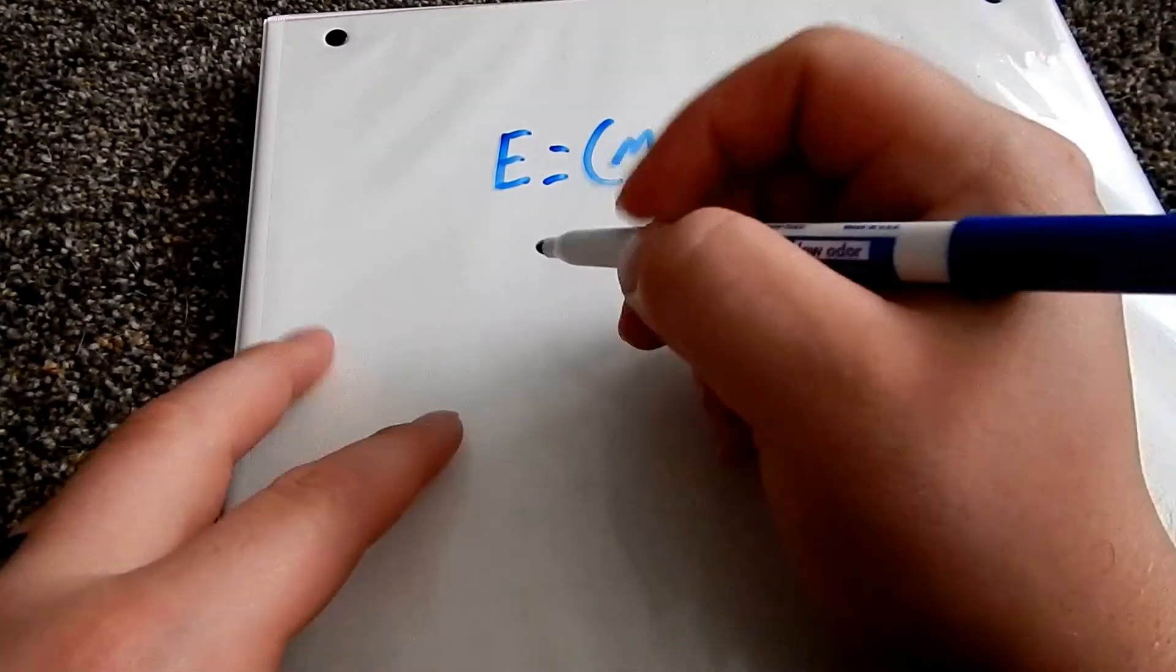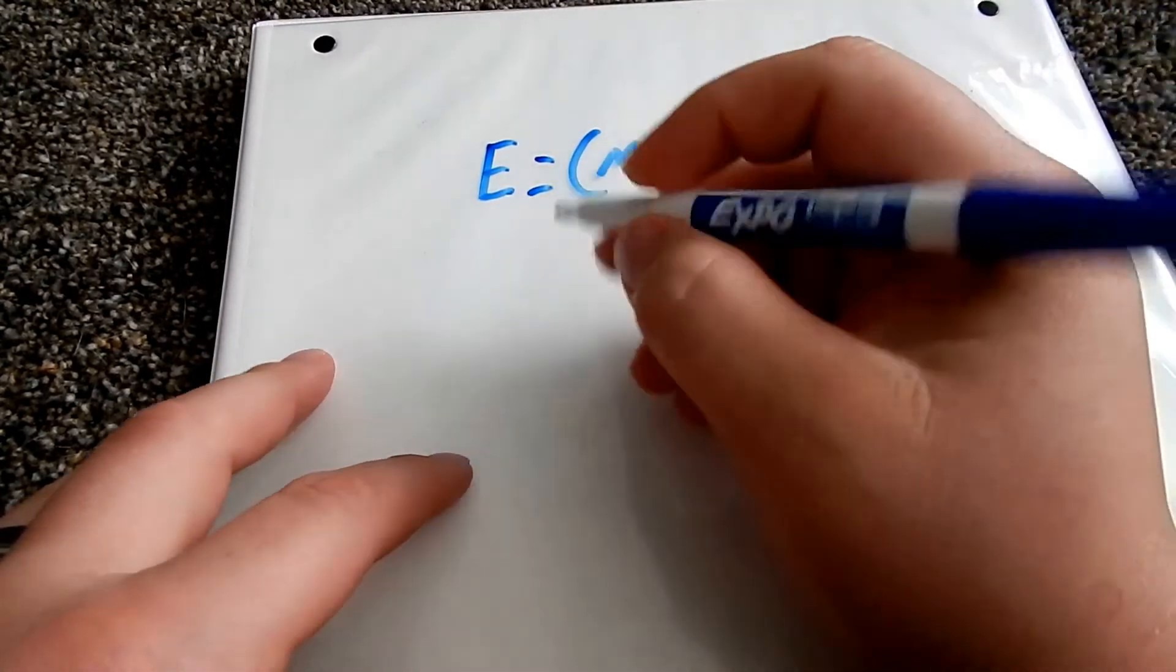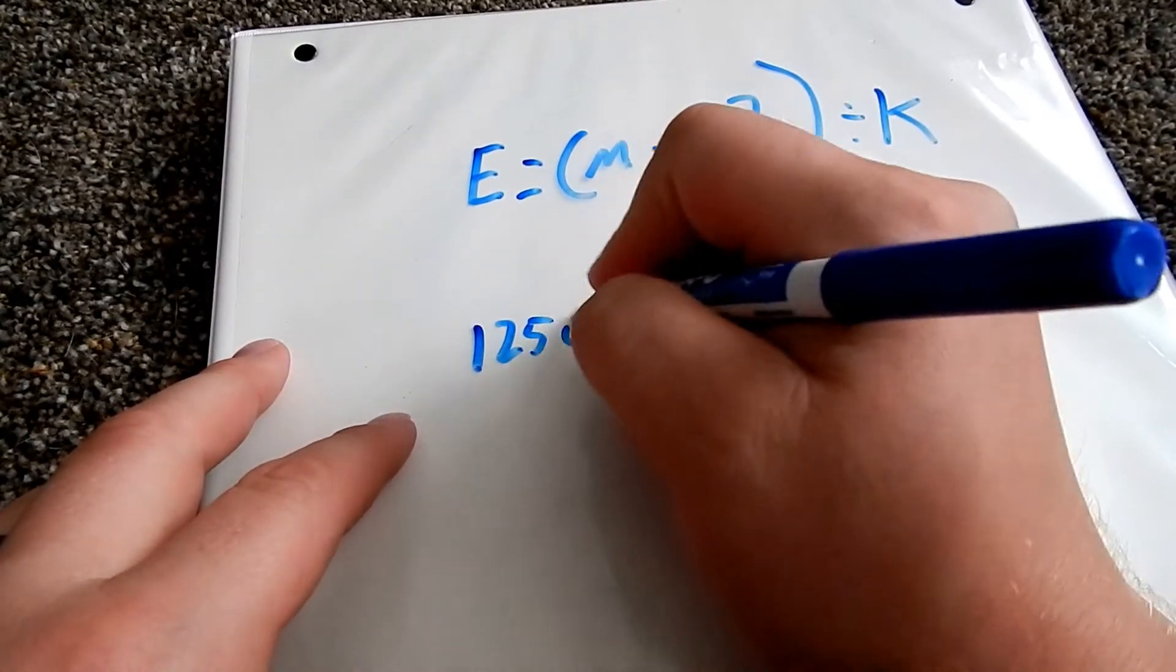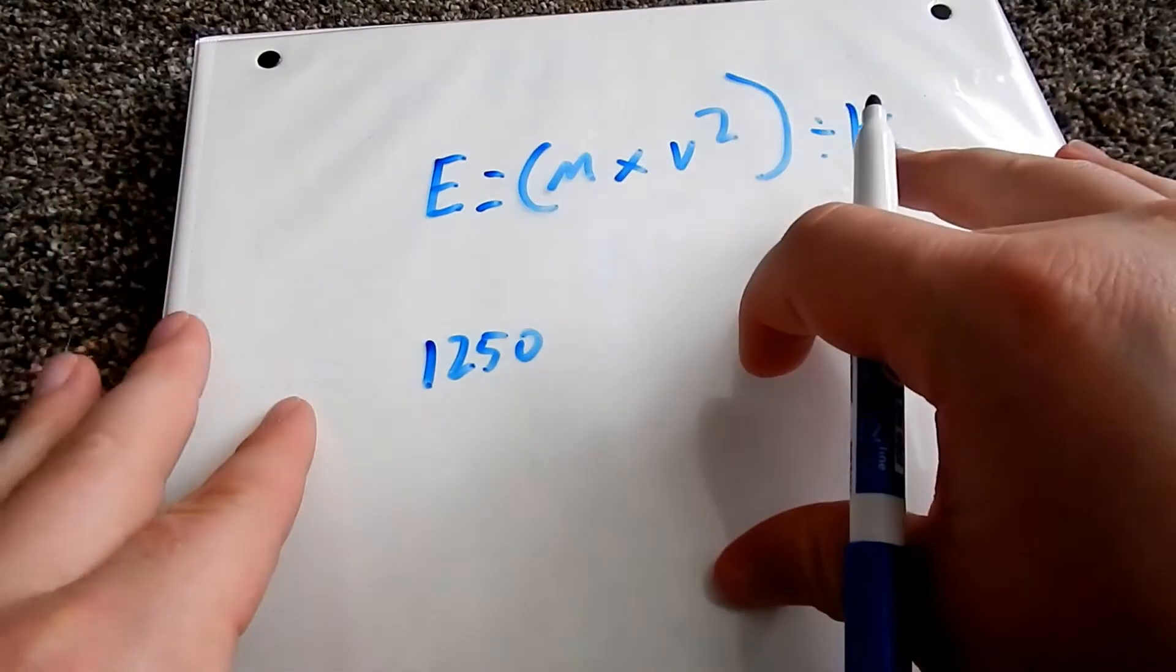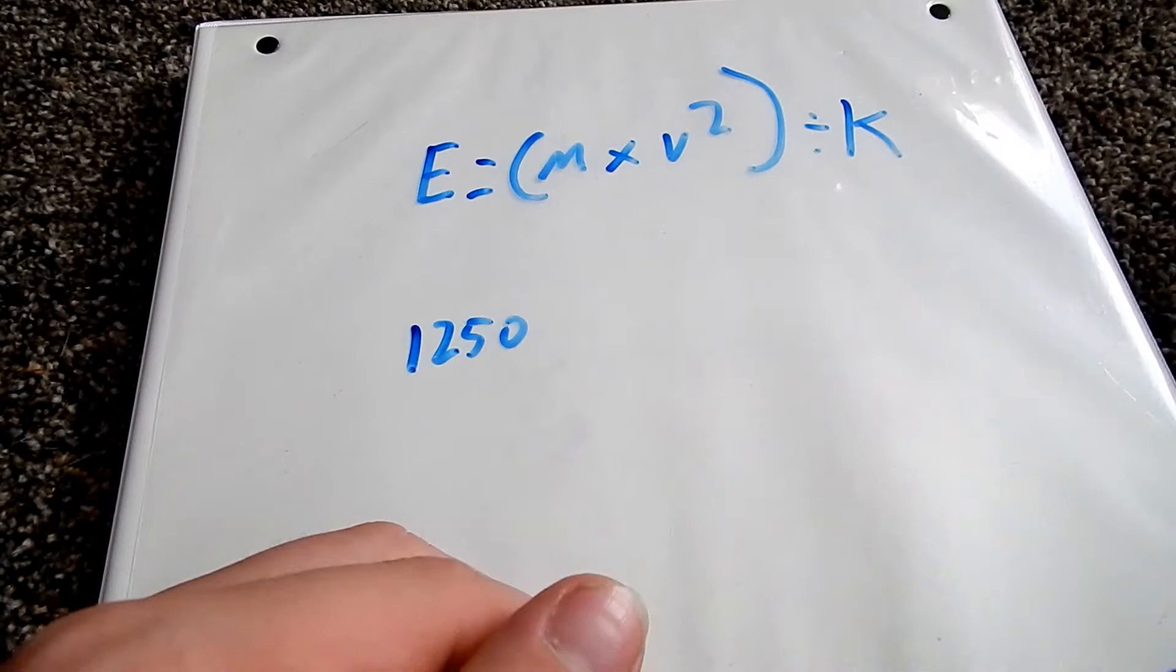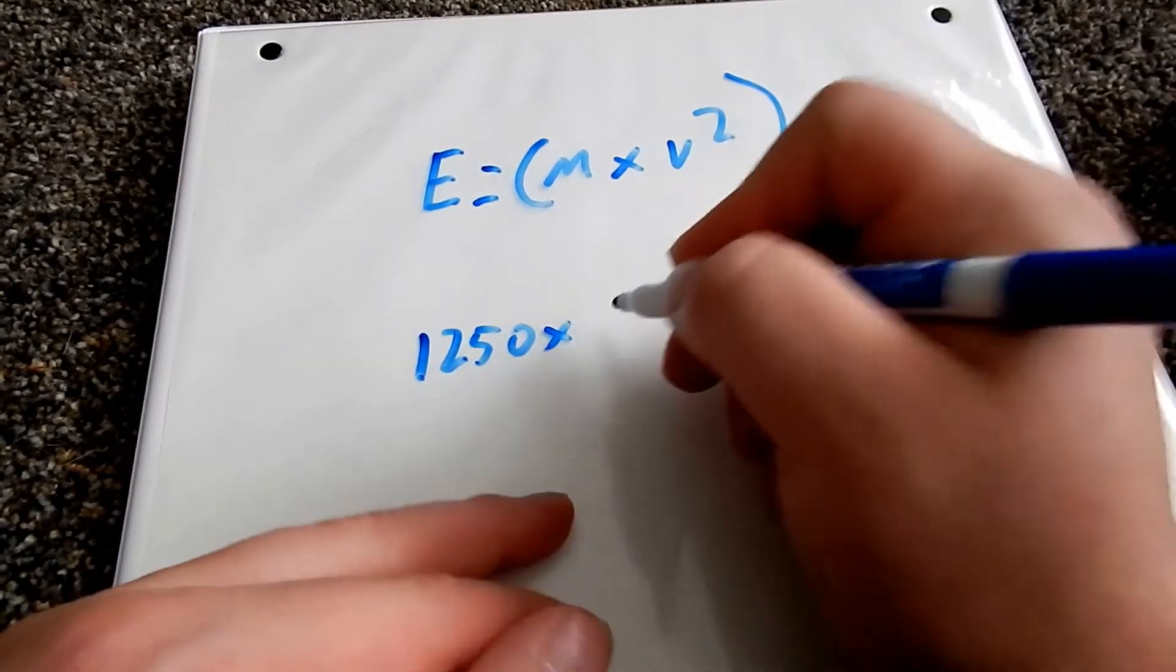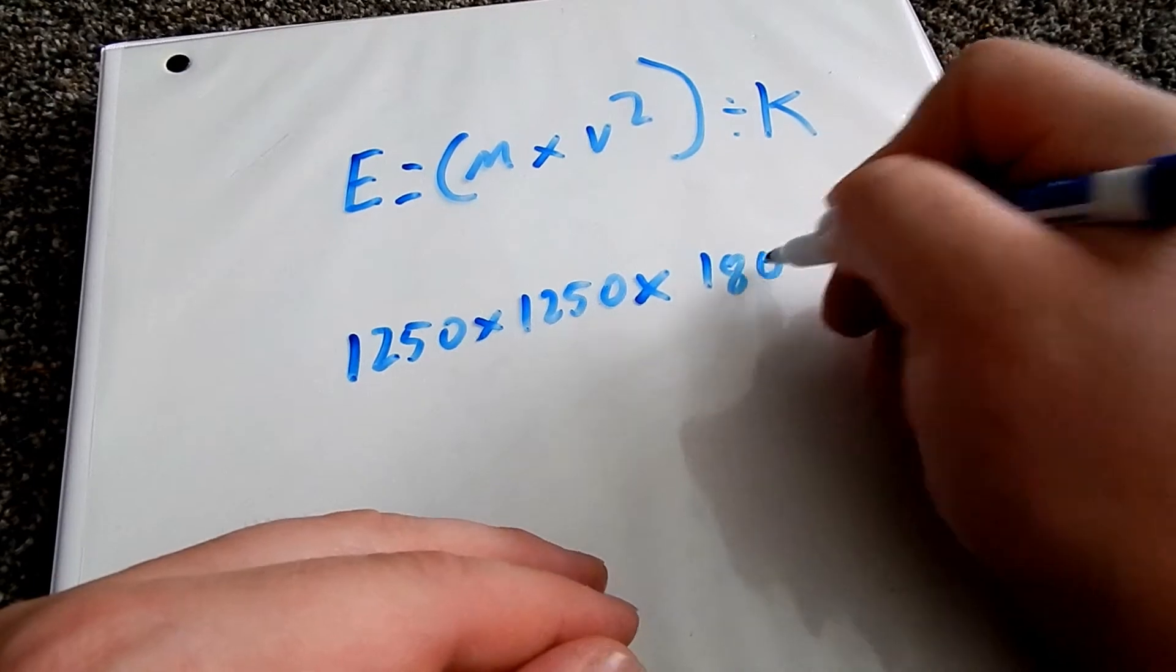So I'm going to just do a quick example here. I did some 10 millimeter reloads and I was getting around 1250 feet per second. Using a chronograph you can get these figures and it helps you know where you're at with your reloads in terms of what commercially produced ammo has out there. So I'm going to go ahead make this simple and that was 180 grain bullet.